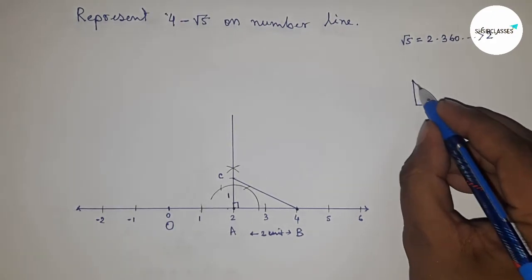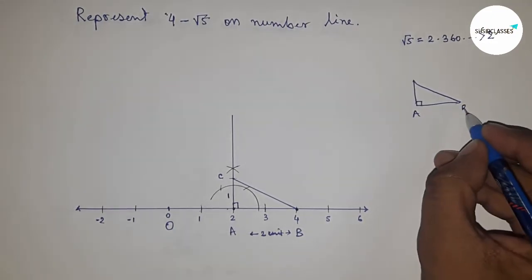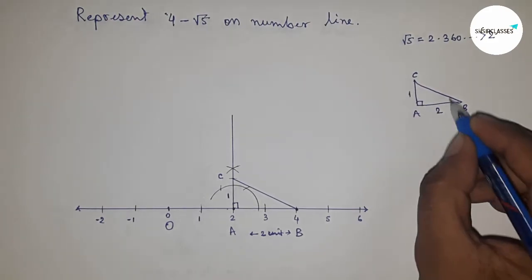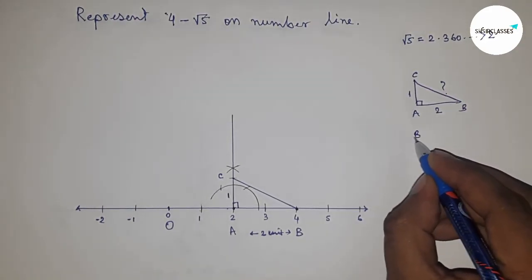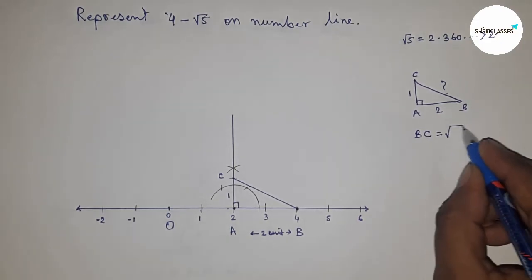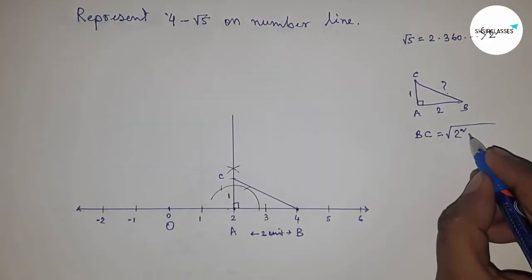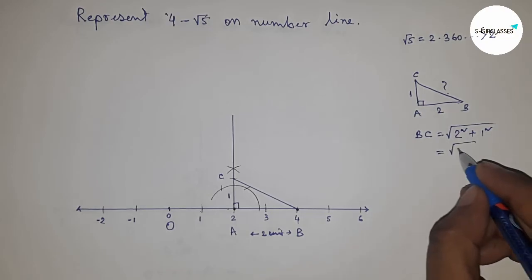Now let's discuss the concept of root 5 briefly. If a right-angle triangle has base equal to 2 and height equal to 1, what is the hypotenuse? By Pythagorean theorem, hypotenuse equals root of base squared plus height squared, so root of 4 plus 1, which equals root 5.